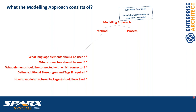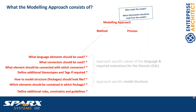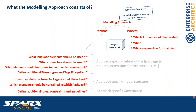If we're missing something, we can add additional stereotypes and tagged values based on a standard — the UML profile mechanism, which Enterprise Architect supports to extend existing languages and customize the tool to your needs. The modeling approach also contains the model structure, similar to the chapter structure of a text-based specification, defining which elements should be contained in which packages. We should also define additional rules, constraints, and guidelines.